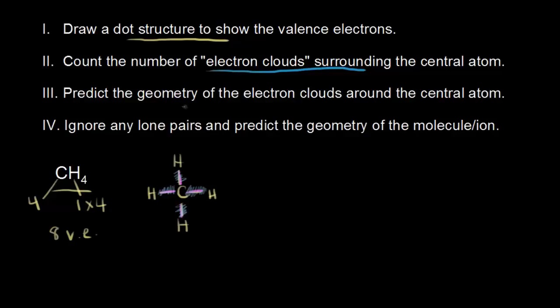The next step is to predict the geometry of your electron clouds around your central atom. VSEPR theory tells us that those valence electrons are going to repel each other since they are negatively charged, and therefore they're going to try to get as far away from each other as they can in space. When you have 4 electron clouds, they are farthest away from each other if they point towards the corners of a tetrahedron, which is a 4-sided figure. So let's go ahead and draw the methane molecule.